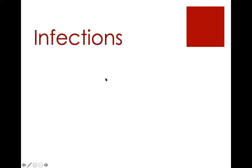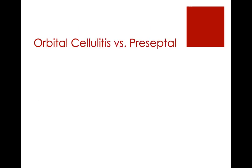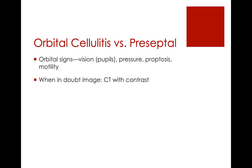Moving on to infections — we're going to cover vision- and life-threatening infections. That includes orbital cellulitis, necrotizing fasciitis, cavernous sinus thrombosis, mucormycosis, and newborn dacrocystitis. Again, distinguishing orbital disease from preseptal disease: when talking about cellulitis, we rely on orbital signs. When there's doubt, get CT with contrast. Sometimes even preseptal disease can be emergent — for example, preseptal necrotizing fasciitis.